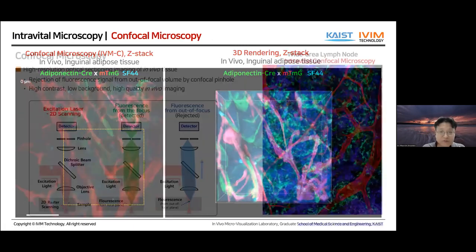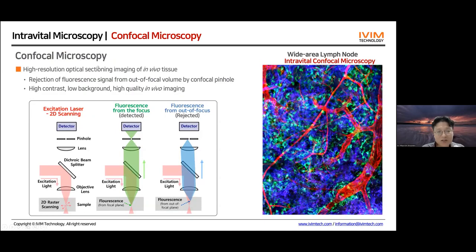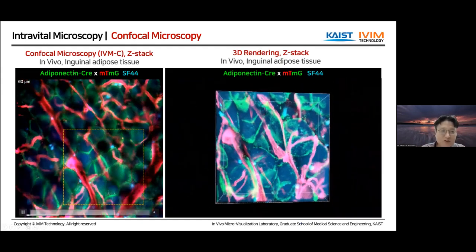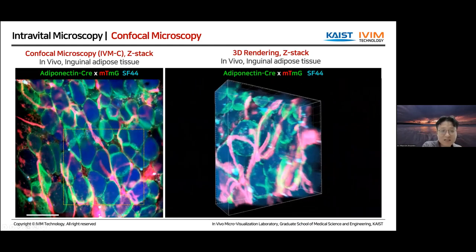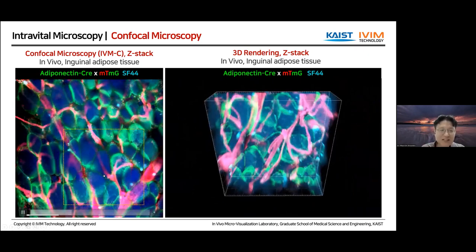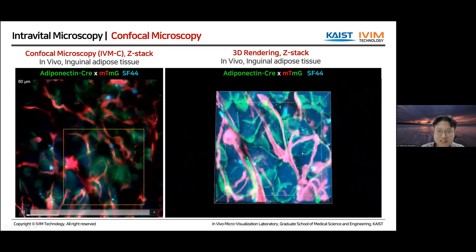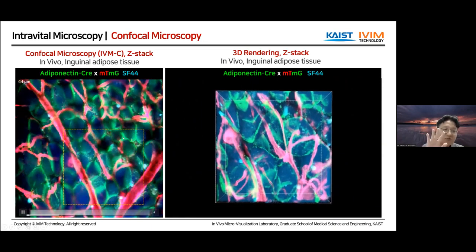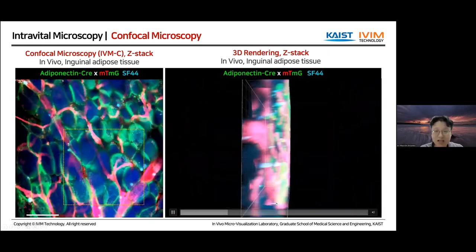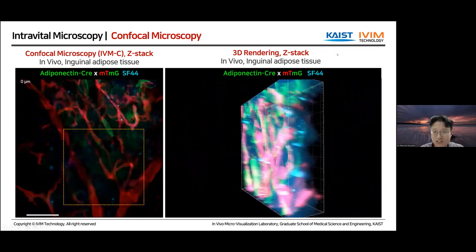Confocal microscopy provides optical z-stack imaging in thick samples like live tissue in a live mouse model. This representative data is from the inguinal adipose tissue of an anesthetized mouse in vivo. Green is the adipocyte, and red includes other cell types such as vascular endothelial cells and macrophages. We achieve very high-resolution z-stack imaging in the live mouse model using our confocal imaging mode, and the data can subsequently be rendered as 3D visualizations.